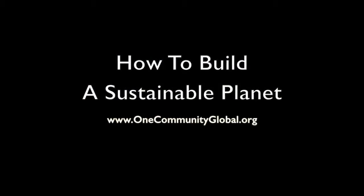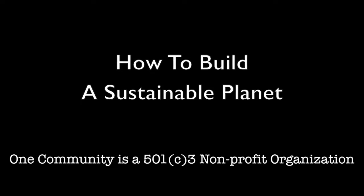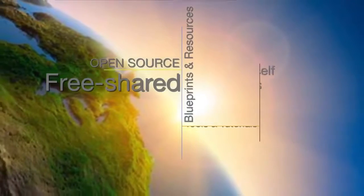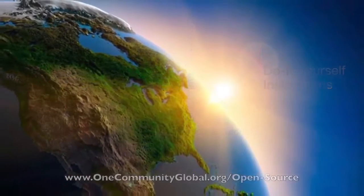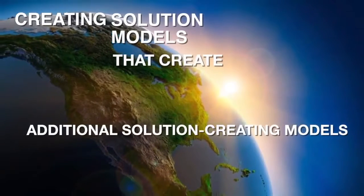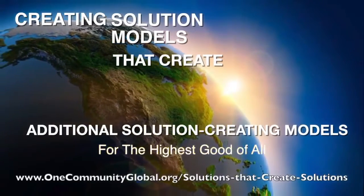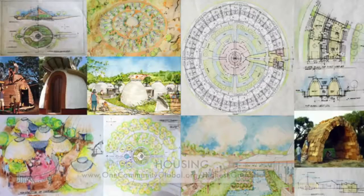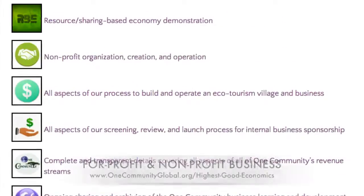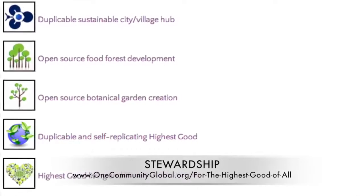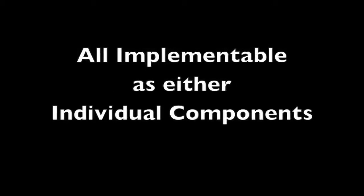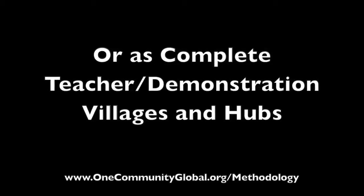How to build a sustainable planet — One Community weekly progress update number 168. One Community is a 501c3 non-profit organization creating open source, free shared blueprints, resources, tools, tutorials, and do-it-yourself instructions for highest good living — creating solution models that create additional solution-creating models in the service of all life on this planet, including highest good approaches to food, energy, housing, education, business creation, society, and true earth stewardship. All of these are designed to be implementable as individual components or as complete teacher demonstration villages and hubs.